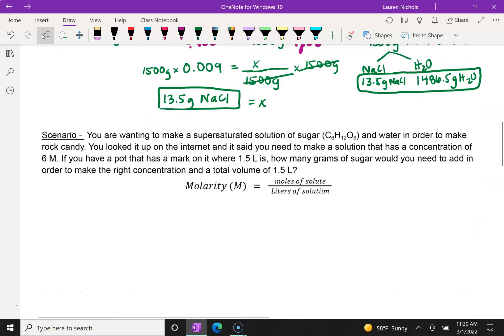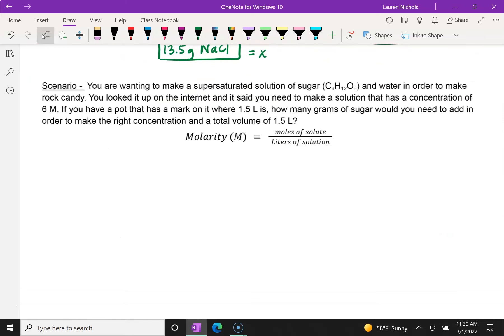So let's look at another way to calculate concentration. So this scenario, you're wanting to make a supersaturated solution of sugar. We'll learn what supersaturated means in another lesson. Of sugar and water in order to make rock candy. You look it up on the internet. It says you need to make a solution that has a concentration of 6 molar. So the way you say that out loud would be 6 molar. If you have a pot that has a mark on it where 1.5 liters is, so we know that if something is liters, that that makes it a measure of our volume. How many grams of sugar would you need? So this is the question. How many grams of sugar would you need to add in order to make the right concentration and a total volume of 1.5 liters?